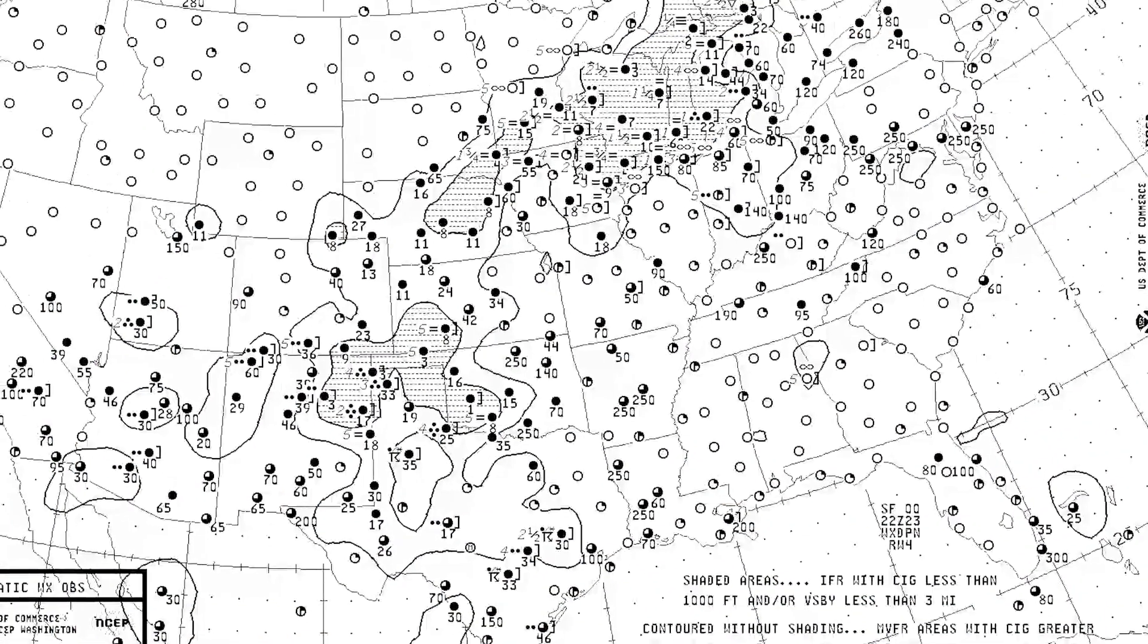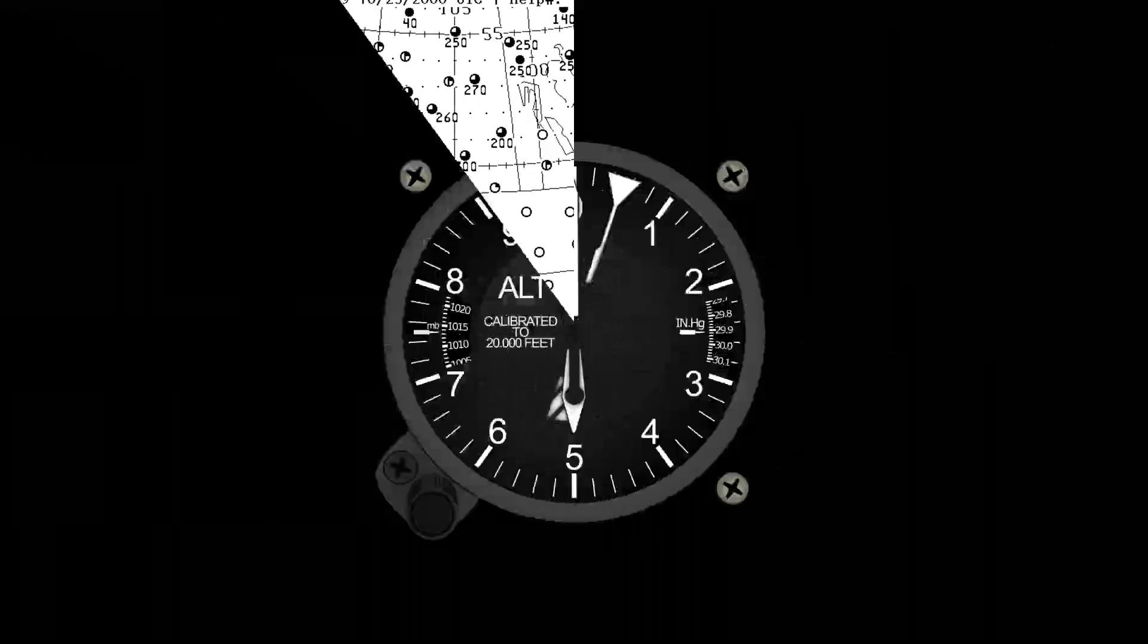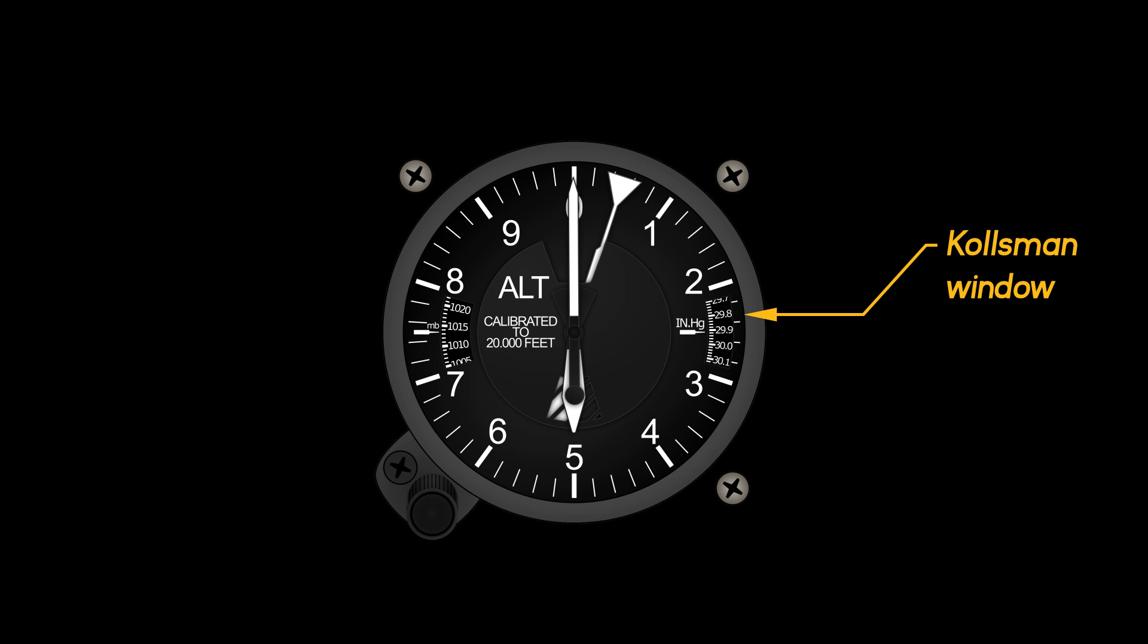Of course, we'll never be flying on a truly standard day, and to account for this, our altimeters can be tuned using the Kollsman window. We do this before every flight and periodically as we fly along.